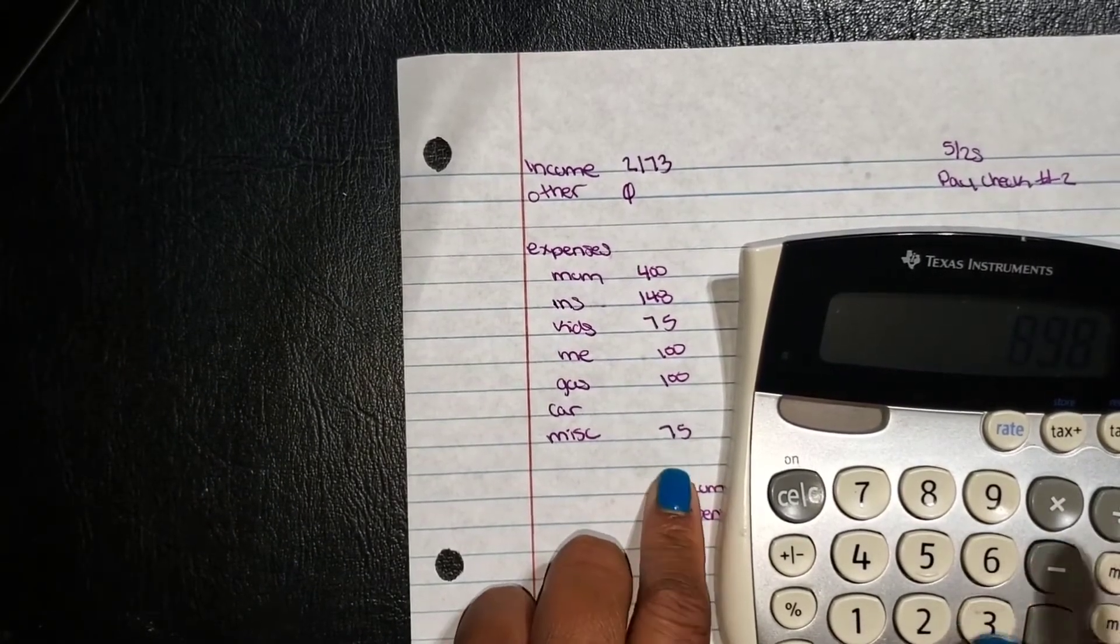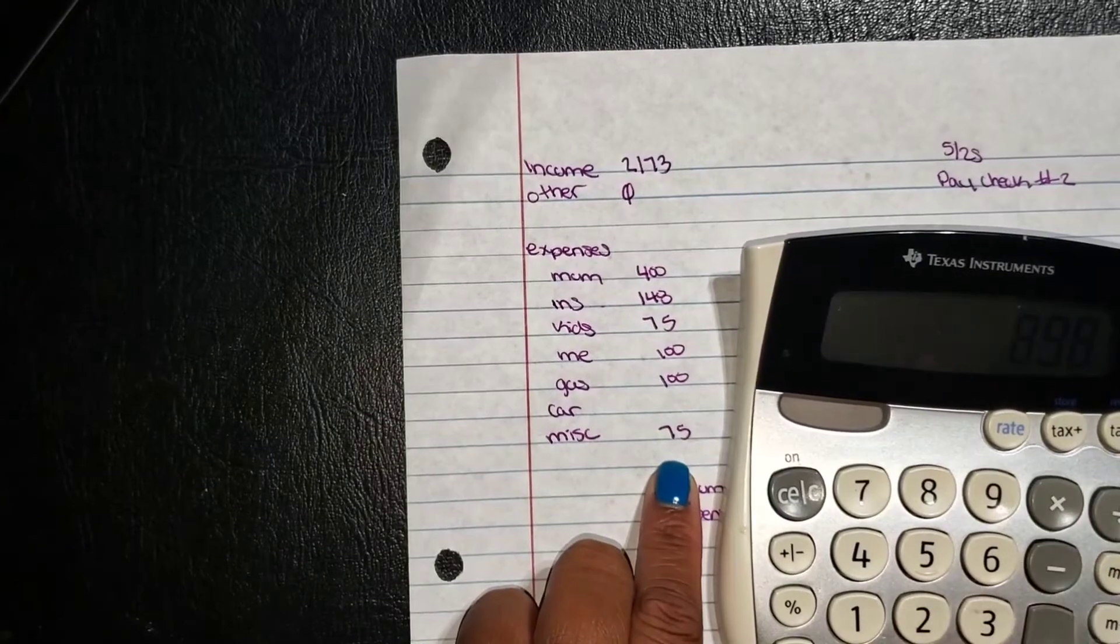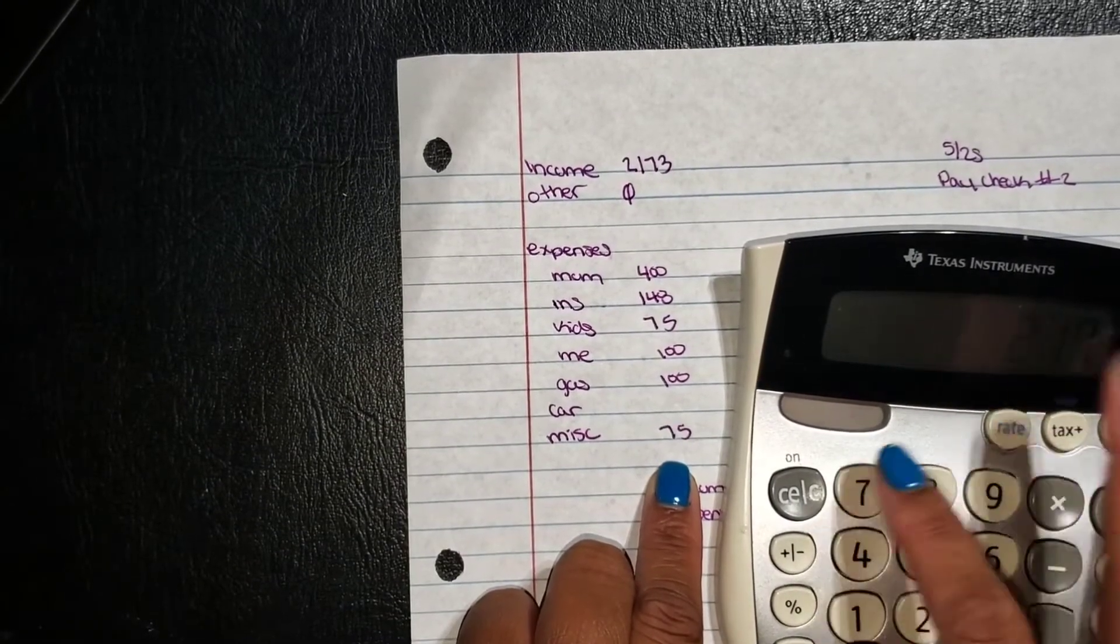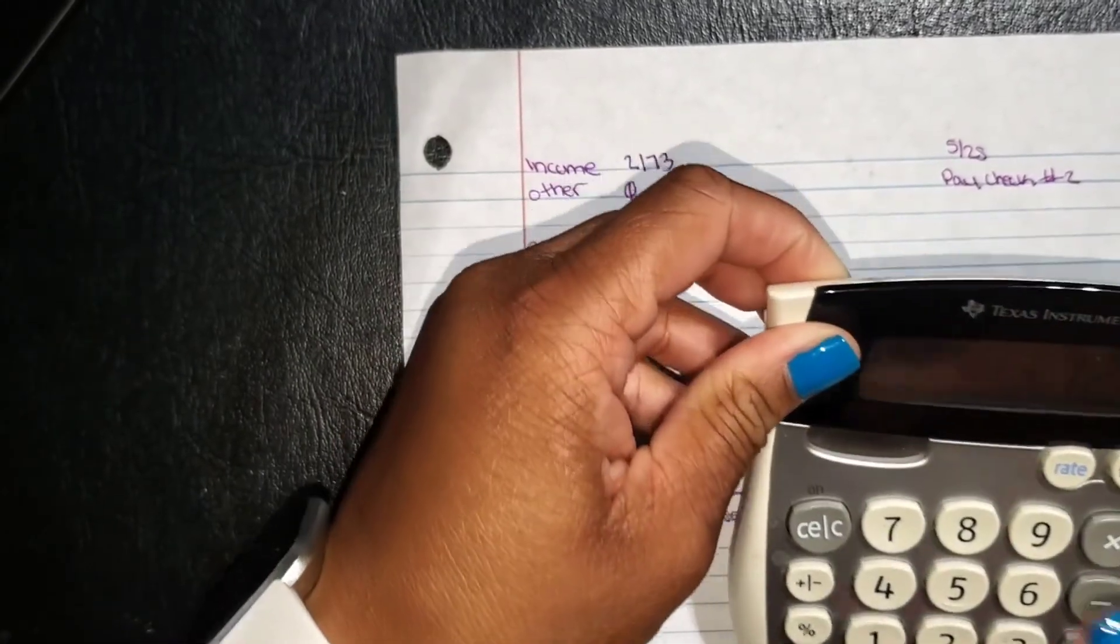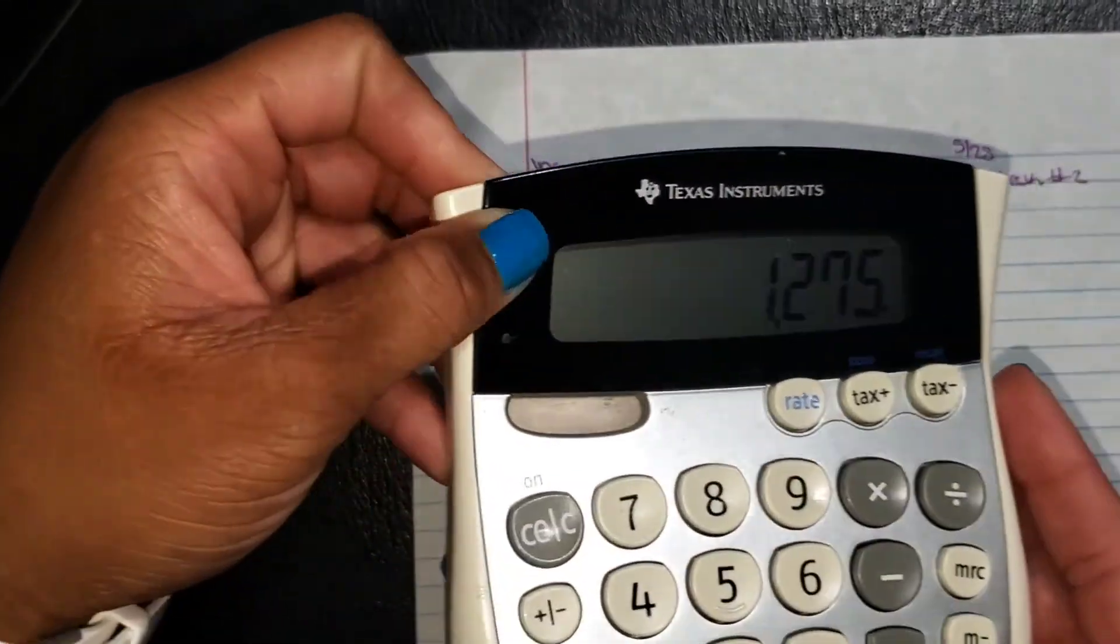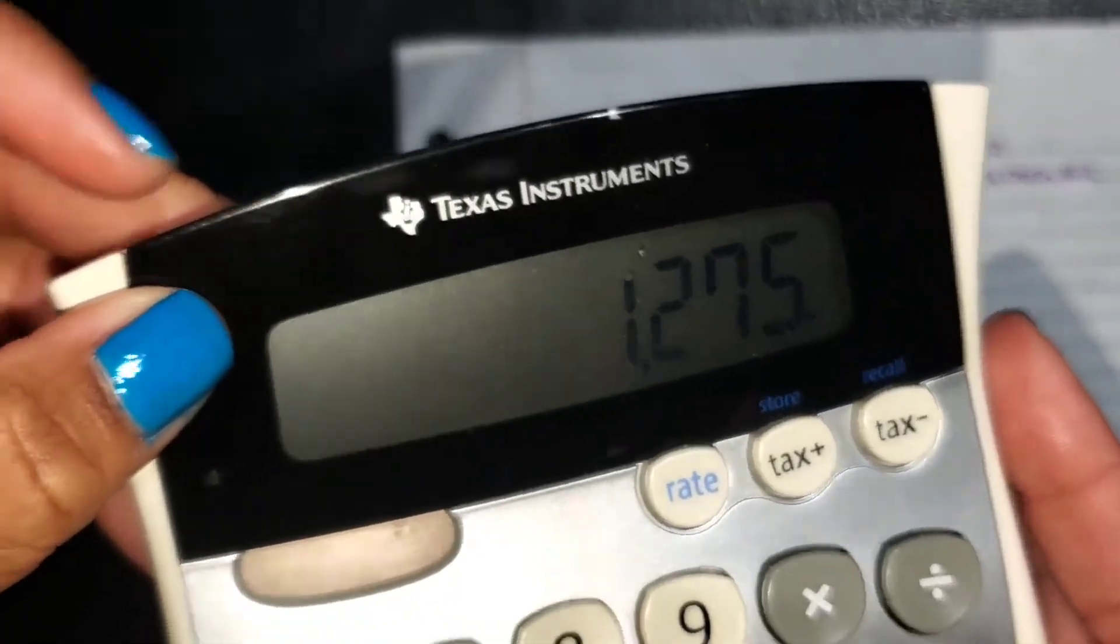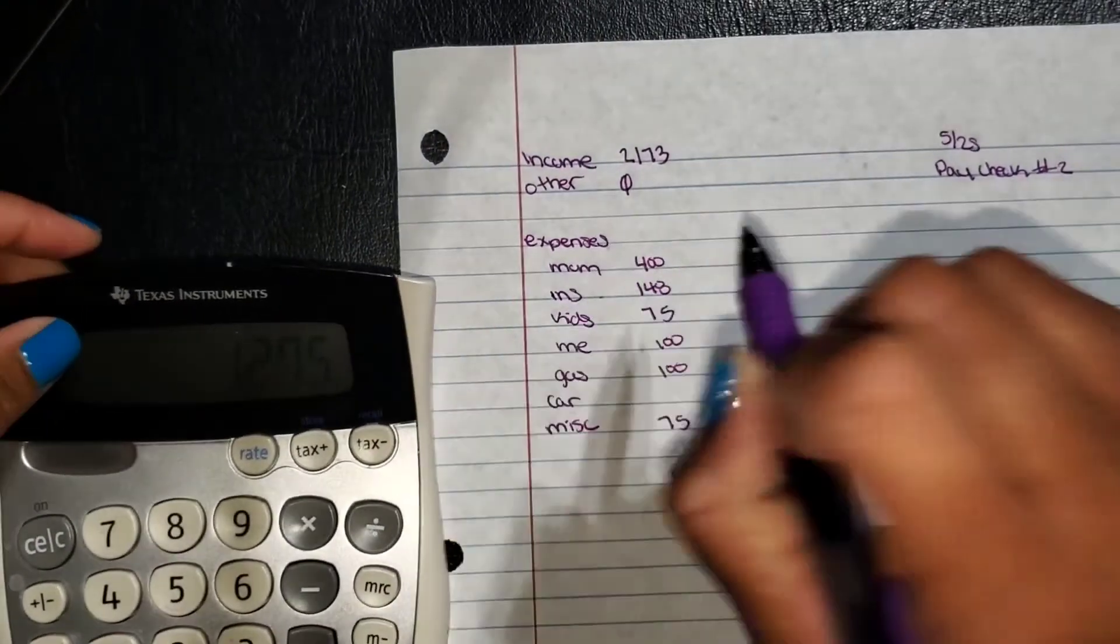And if we subtract the current amount from my income that will give us my car payment. So my car payment is going to be $1,275.